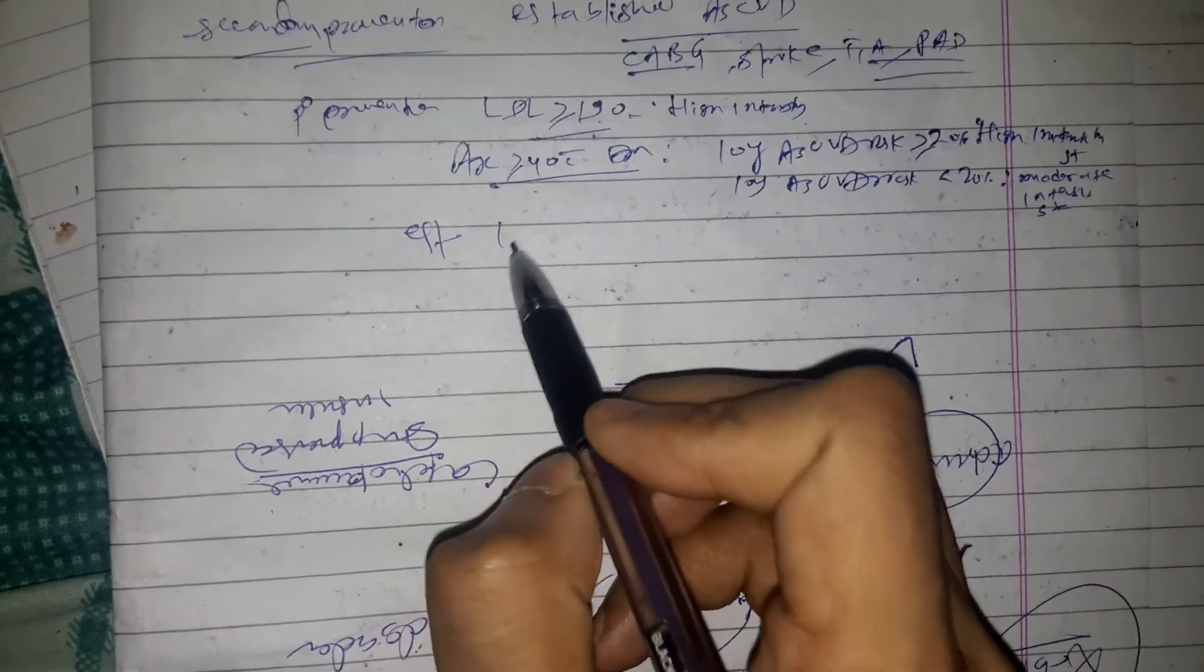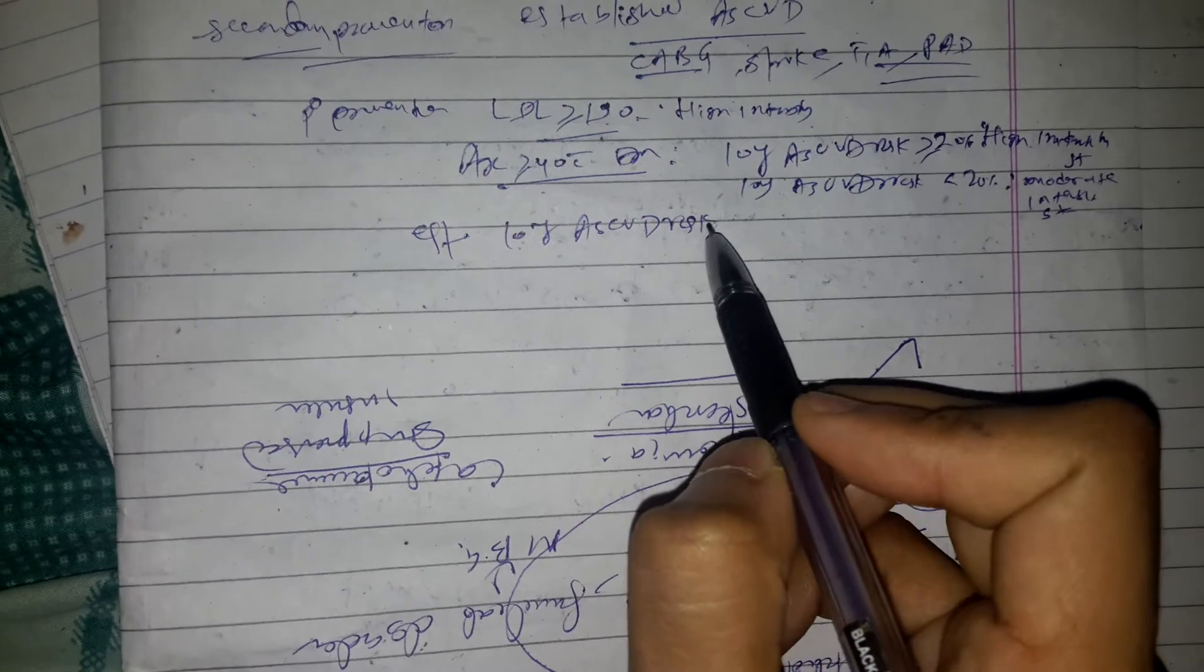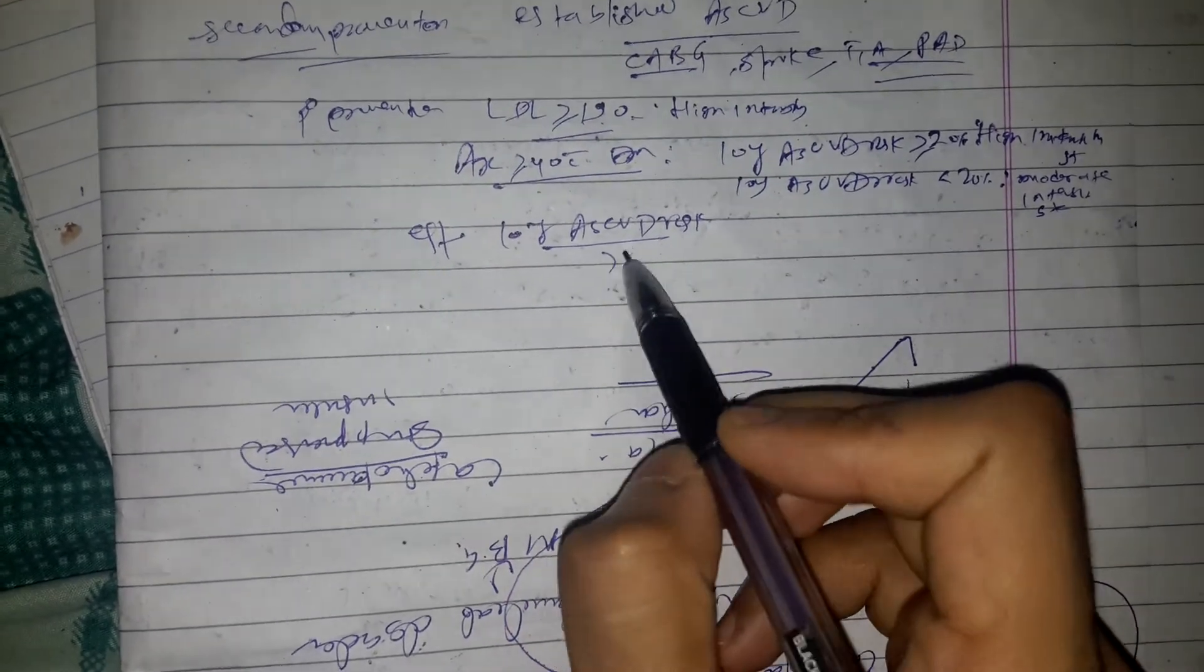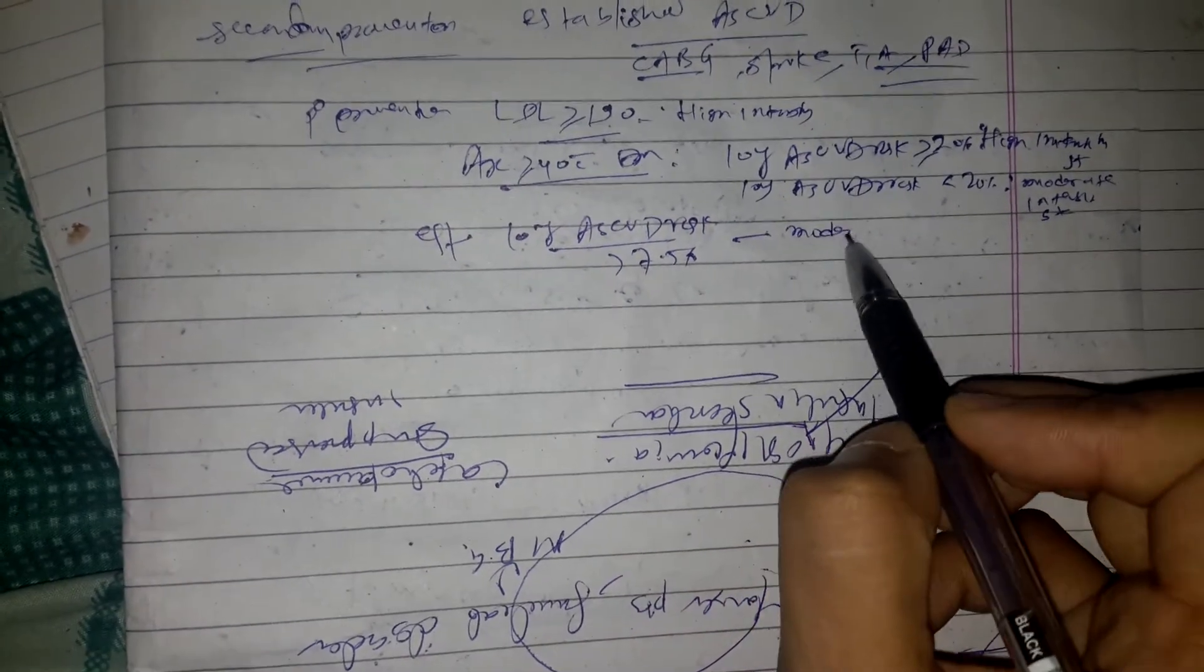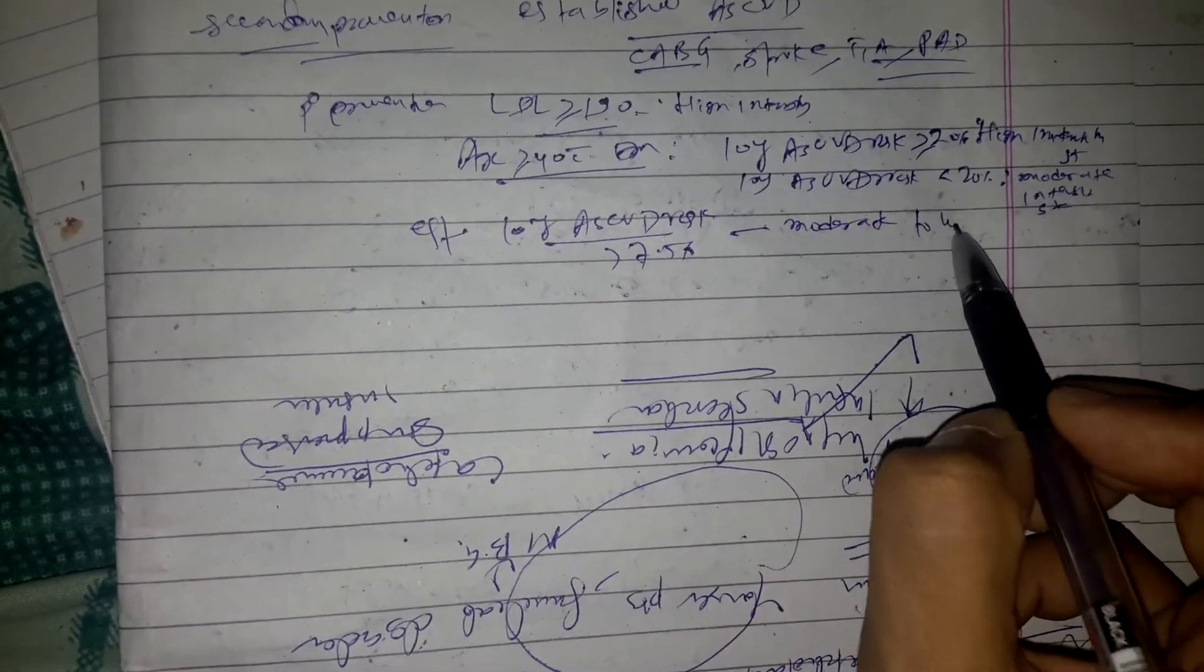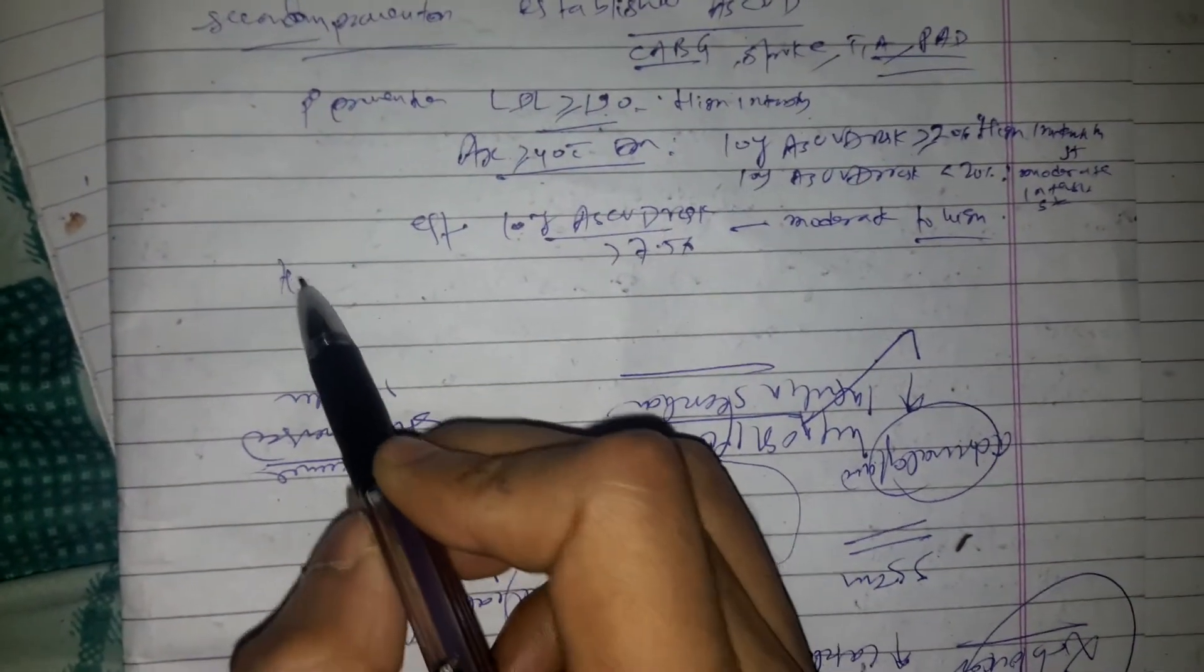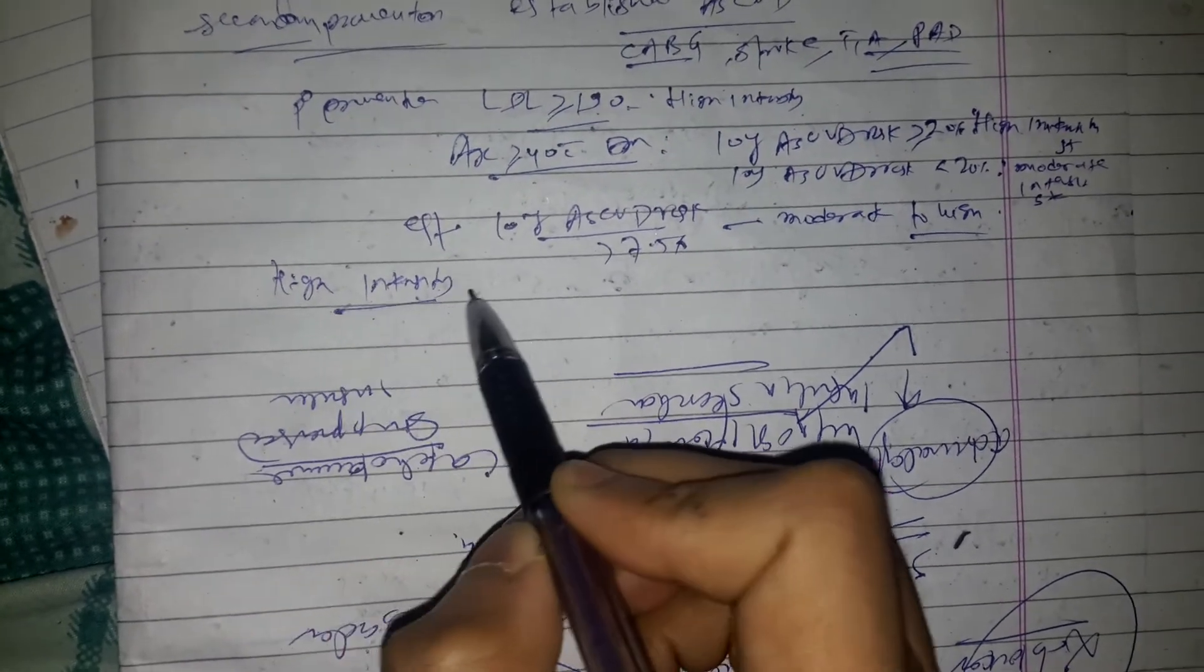We estimate 10-year ASCVD risk through the pooled cohort equation. If it is greater than 7.5%, then we also prescribe moderate to high intensity statins. So what is high intensity statin? Which drugs come under high intensity statin?